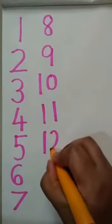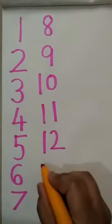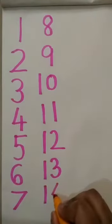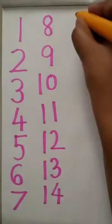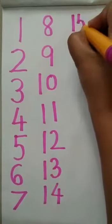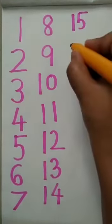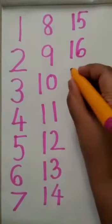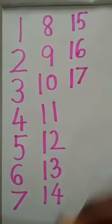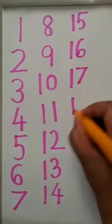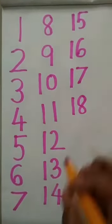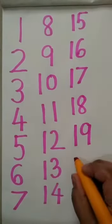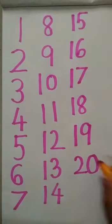One, two, twelve. One, three, thirteen. One, four, fourteen. One, five, fifteen. One, six, sixteen. One, seven, seventeen. One, eight, eighteen. One, nine, nineteen. Two, zero, twenty.